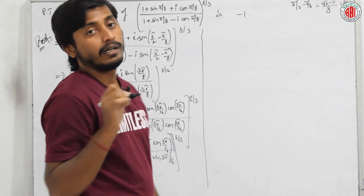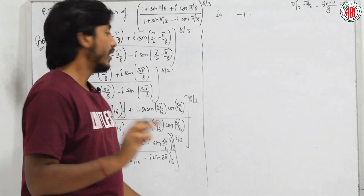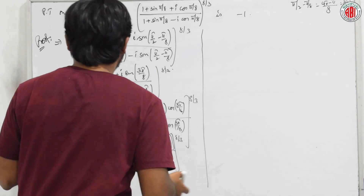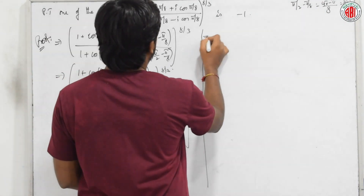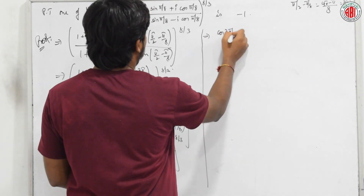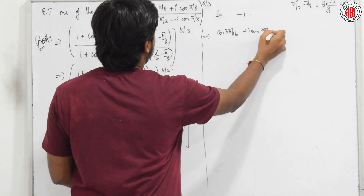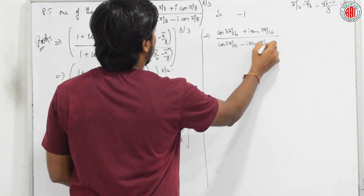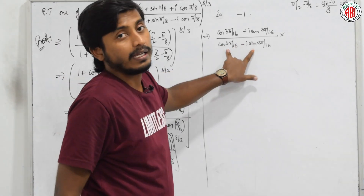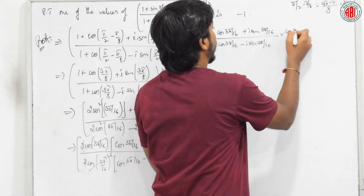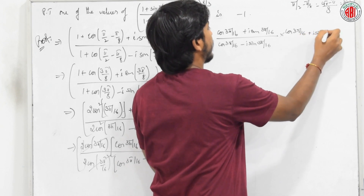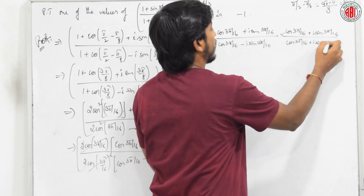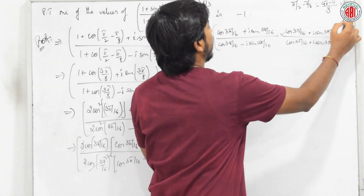We rationalize the denominator by multiplying by (cos(3π/16) + i sin(3π/16)). Using (a−b)(a+b) = a²−b², the denominator gives cos²(3π/16) + sin²(3π/16) = 1, and the numerator becomes (cos(3π/16) + i sin(3π/16))² all raised to 8/3.